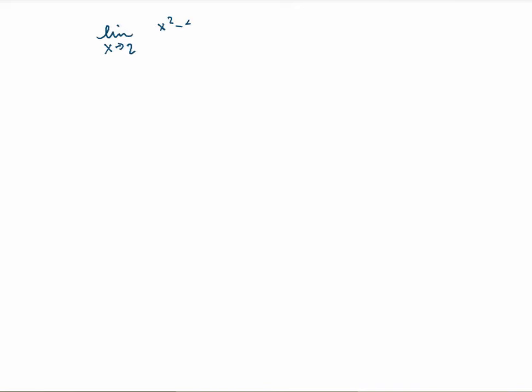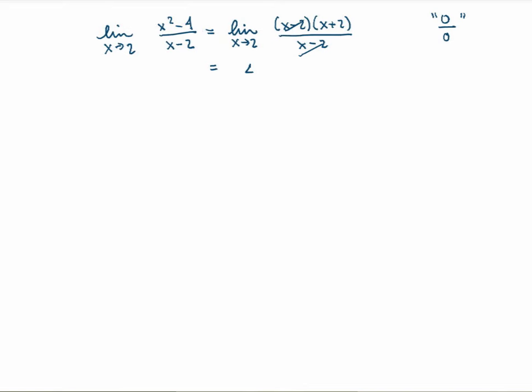Let me first remind you what we did last semester. We studied a certain type of limit. For example, if we had the limit as x goes to 2 of x squared minus 4 over x minus 2, then we realized that this is a case of the type 0 over 0 because as x goes to 2, the numerator and the denominator are both 0. But in this case we could actually evaluate the limit because we could realize that the numerator factorizes to x minus 2 times x plus 2, and then we can simplify and we end up with the limit as x goes to 2 of x plus 2, which is just equal to 4.